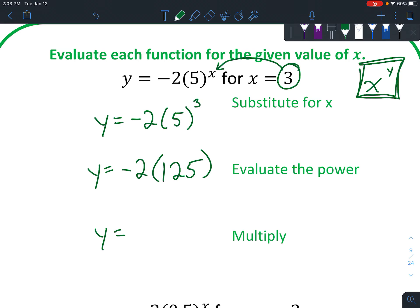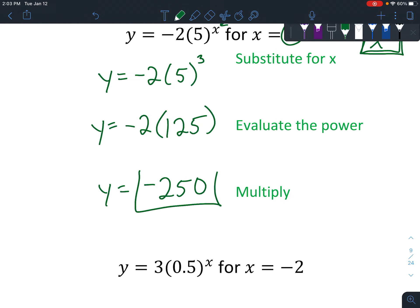And next we're going to multiply negative 2 times 125 to get negative 250. And that will be your final answer.